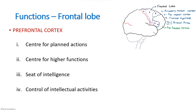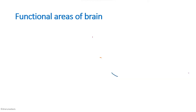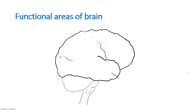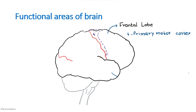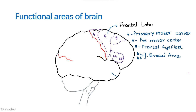To revise: the frontal lobe contains the precentral cortex — which consists of the primary motor cortex (area 4), the premotor cortex (area 6), the frontal eye field (area 8), and Broca's area (areas 44 and 45) — and the prefrontal cortex, which is the seat of intelligence, the area for planned actions, and the area for higher functions.